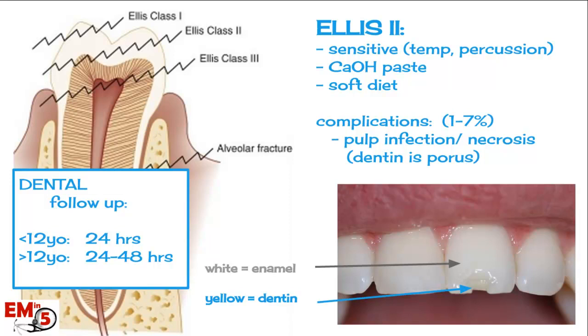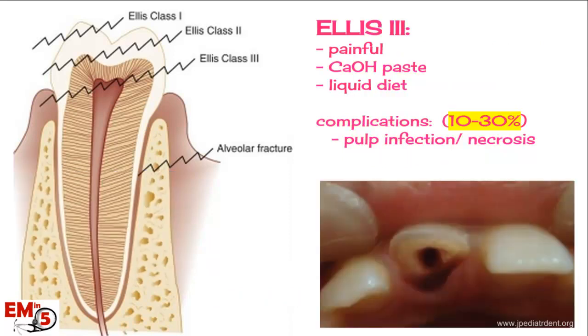In the pediatric population, their tooth has a higher ratio of pulp, so they actually need to follow up sooner than adults.